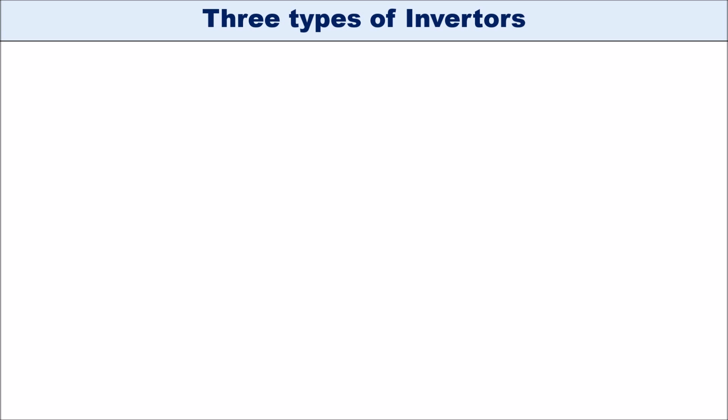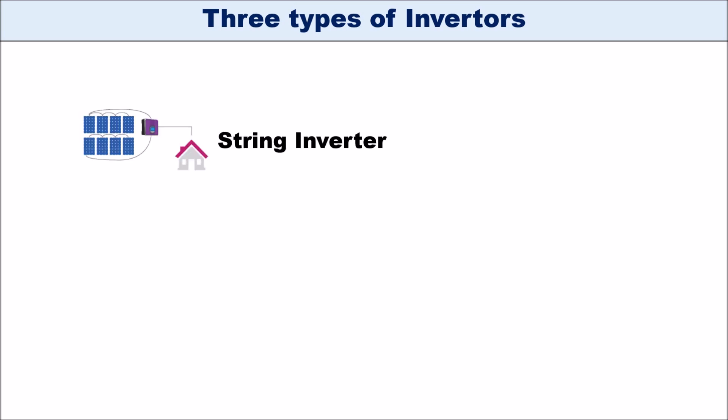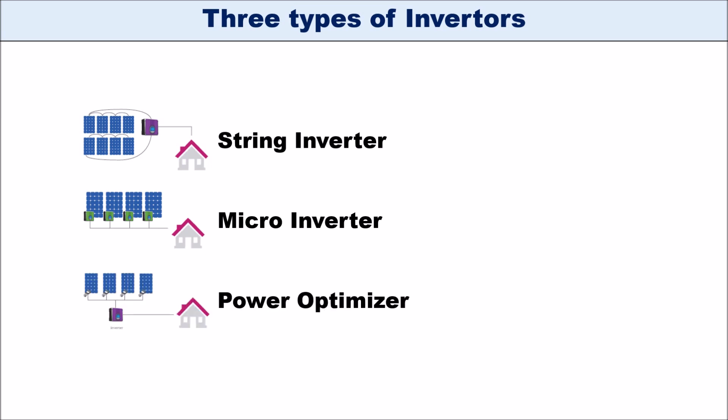Let's jump into it. The three types of solar inverters: the first type is called the string inverter, the second is the micro inverter, and the third is the power optimizer. We'll go through each of these three types in detail.